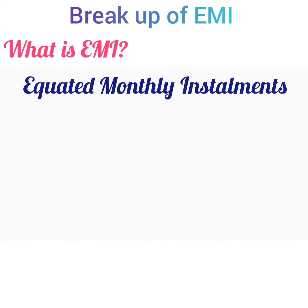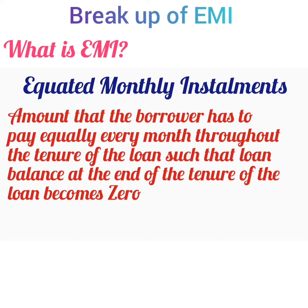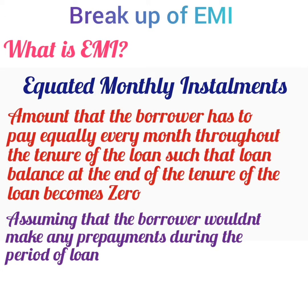EMI stands for Equated Monthly Installments. It is the amount that the borrower has to pay equally every month throughout the tenure of the loan, such that the loan balance at the end of the tenure becomes zero, assuming that the borrower wouldn't make any prepayments during the period of the loan.